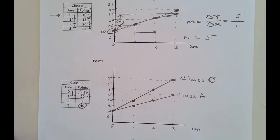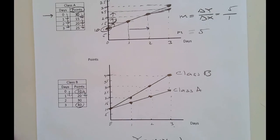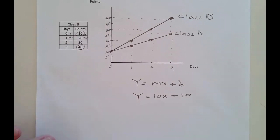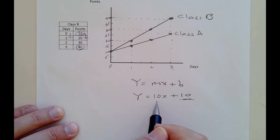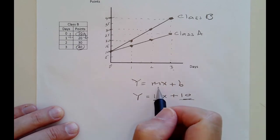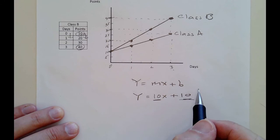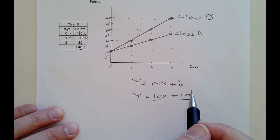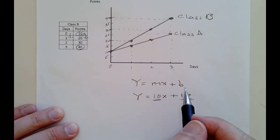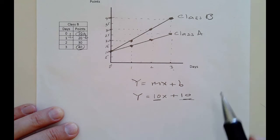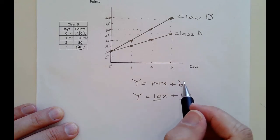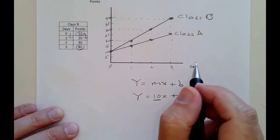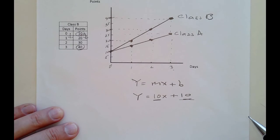A higher slope means it's going to be steeper. A higher m means that x affects y in a greater way. In class A, every time you come to class you get 5 more points. In class B, coming to class is more effective — x has a bigger impact on y. Instead of getting 5 more points per day of attendance, you get 10 more. A steeper slope means the x variable has a larger impact on the y variable.